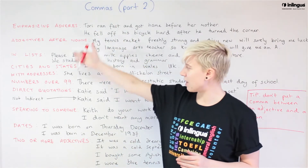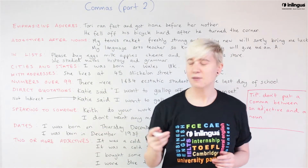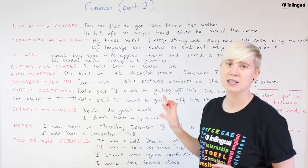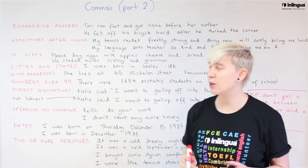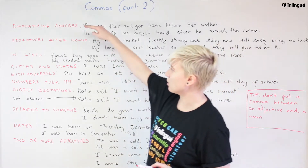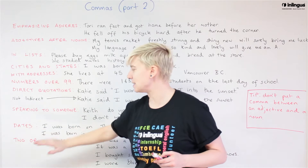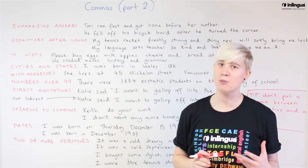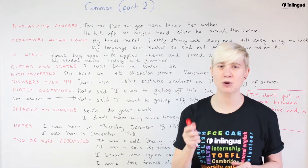Down on the side of my board here in red I have some categories, and then all of the black writing is example sentences. I know it looks like a lot of information, but really it's just ten fairly easy things to help you remember, and then some practice, so don't panic.